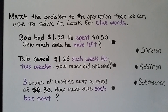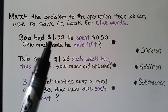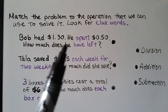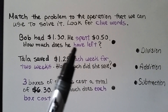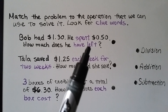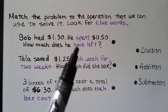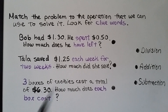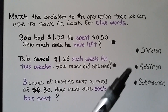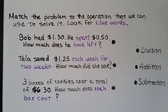We need to match the problem to the operation we can use to solve it, and we look for clue words. The first problem says: Bob had one dollar and thirty cents, he spent fifty cents — how much does he have left? He spent some money and we need to know what he has left. The operation is subtraction.